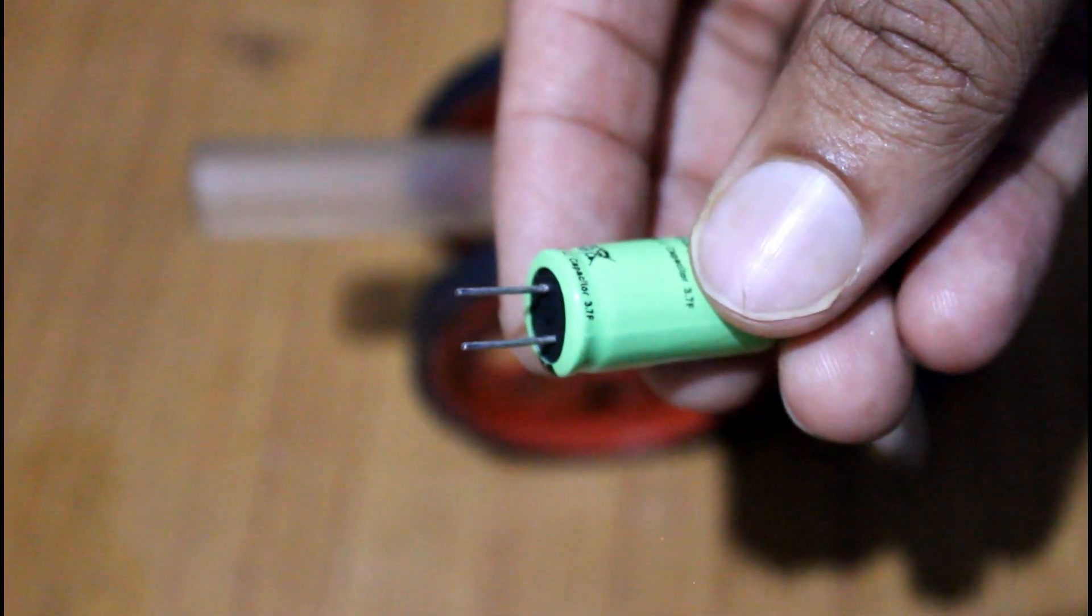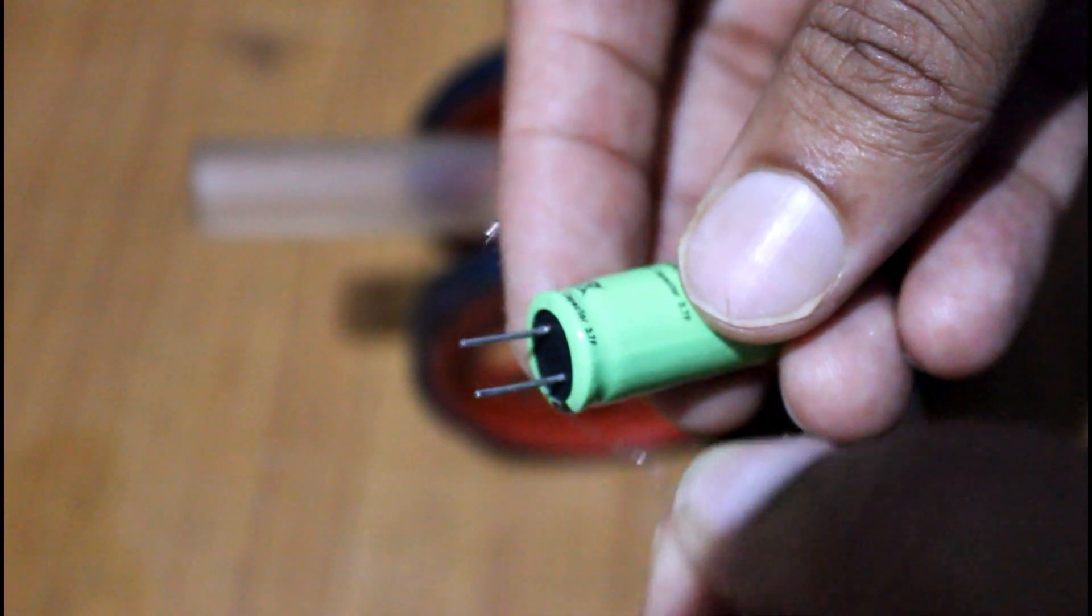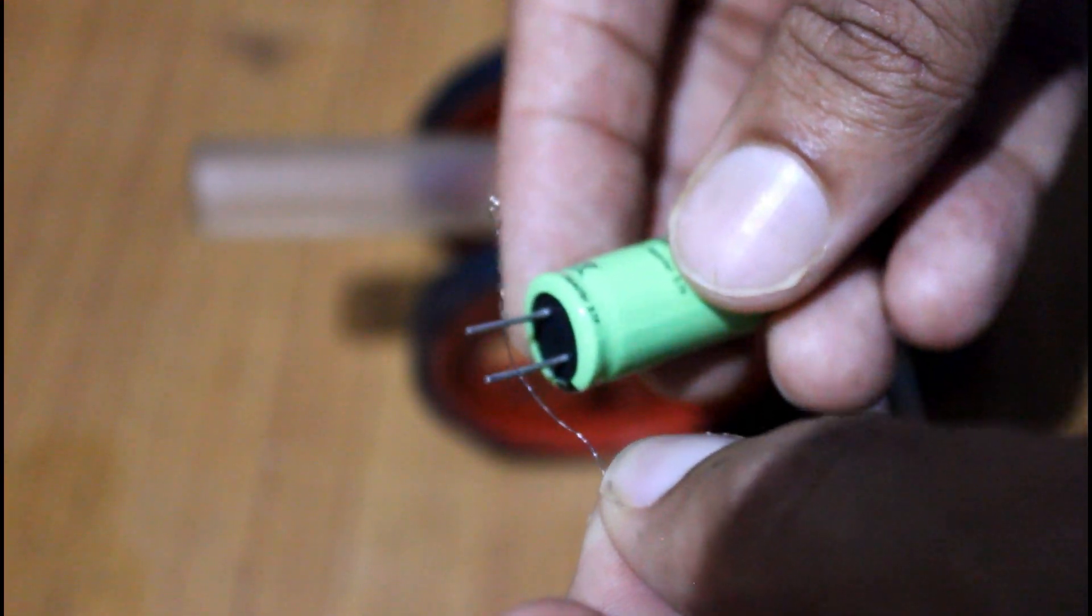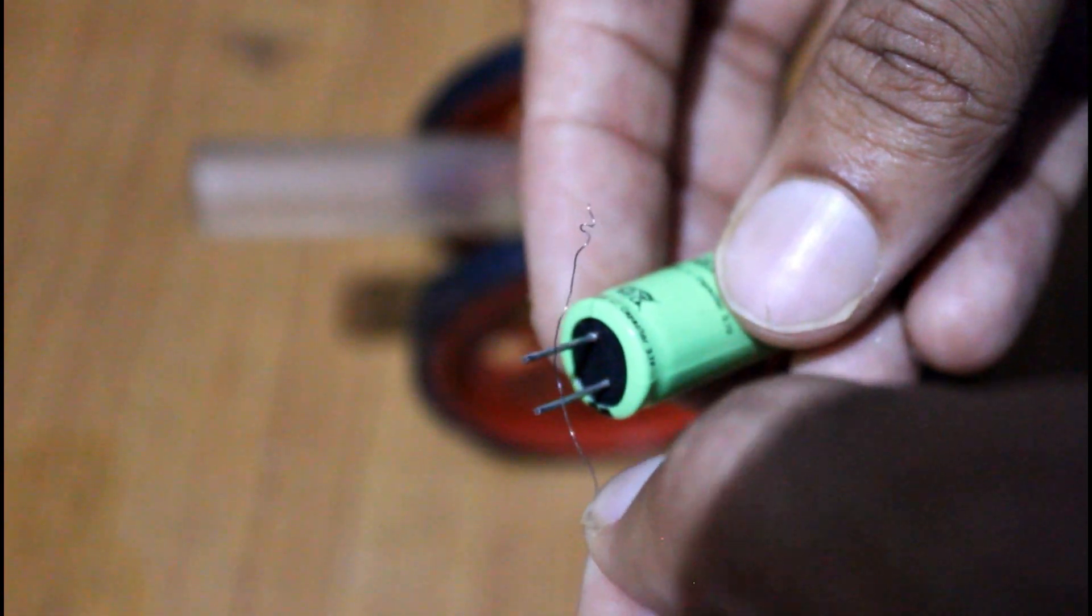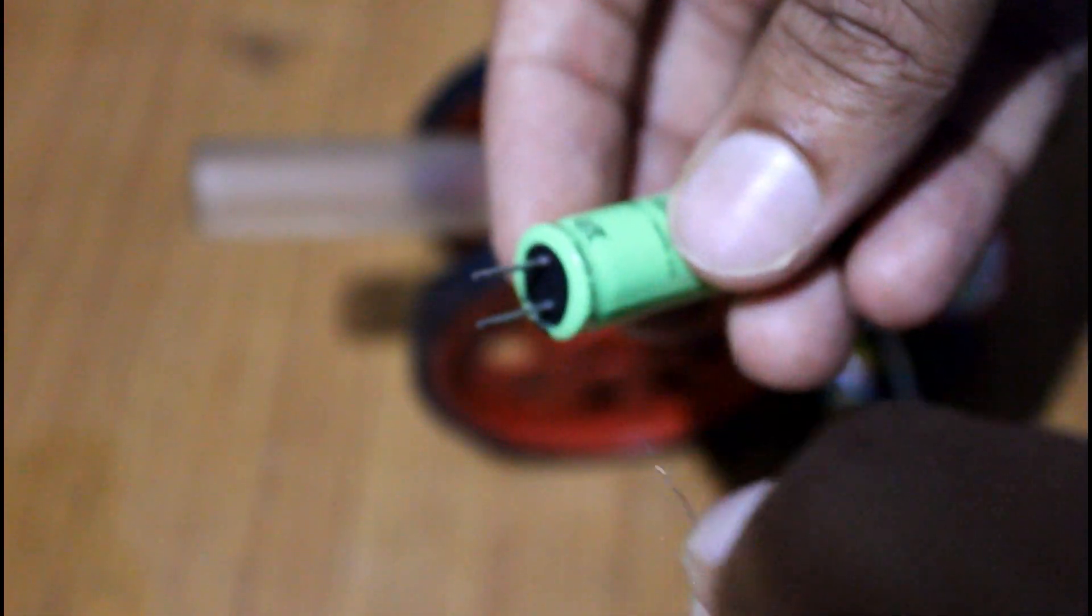And here I am using this capacitor of 3.7 volts to ignite the cannon. Well, here you can see the spark. It's really powerful.